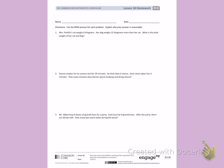Number one. Mrs. Portolo's cat weighs 6 kilograms. Her dog weighs 22 kilograms more than her cat. What is the total weight of her cat and dog? I know her cat weighs 6 kilograms, and her dog weighs 22 kilograms more than her cat. Get a crayon or a highlighter and highlight the question. What is the total weight of her cat and dog? This problem involves two steps, so I'm going to make space on my paper to solve two steps.